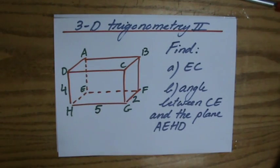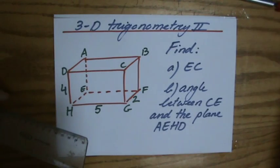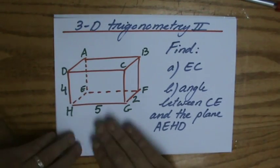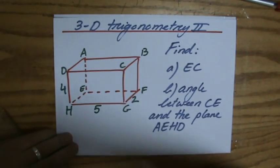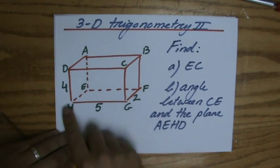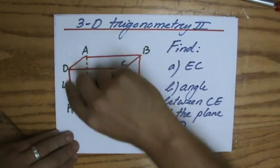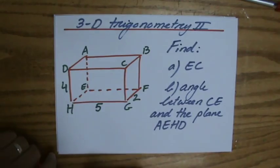We'll continue to talk about three-dimensional trigonometry applied in three-dimensional figures. I made a quick sketch of a cuboid here and the dimensions are 5 by 2 by 4 units.